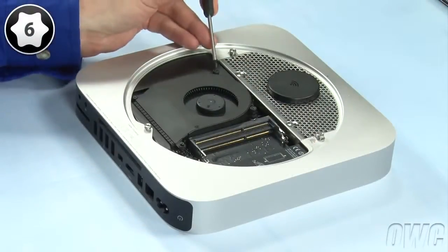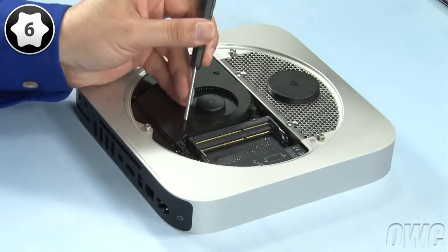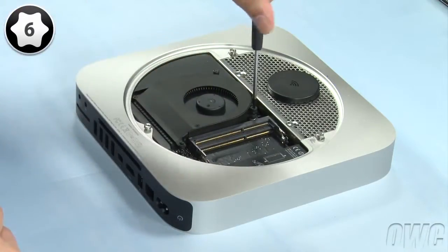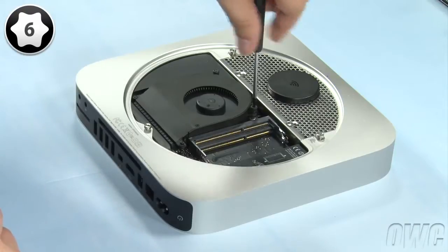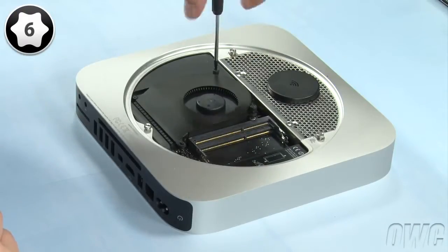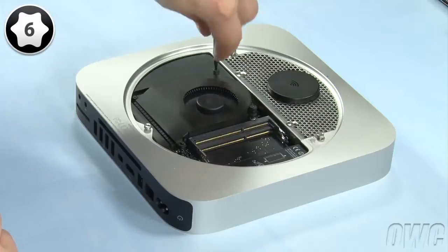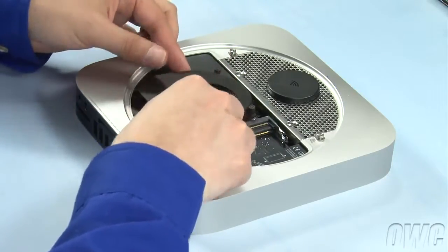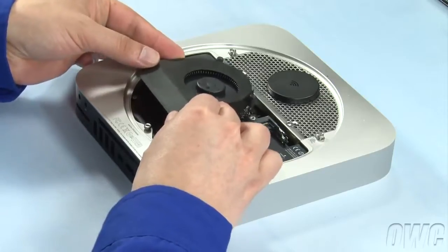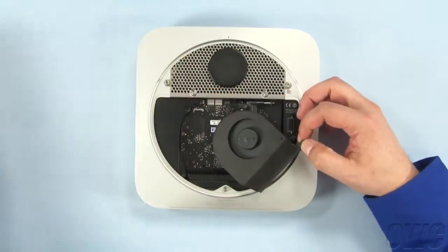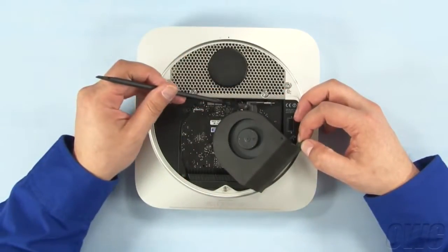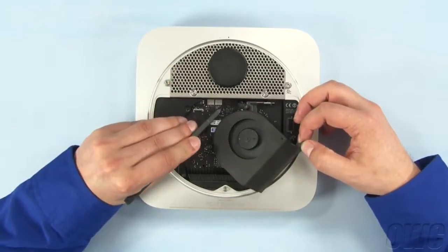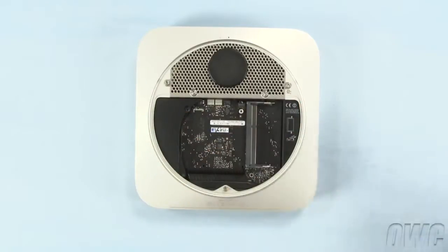Next, use your Torx T6 screwdriver to loosen the three screws that hold the fan in place. Once you've done that, gently lift the fan up and to the side to reveal the fan connector. Use your nylon pry tool to gently lift up on the connector to detach it from the logic board. You may then set the fan aside.